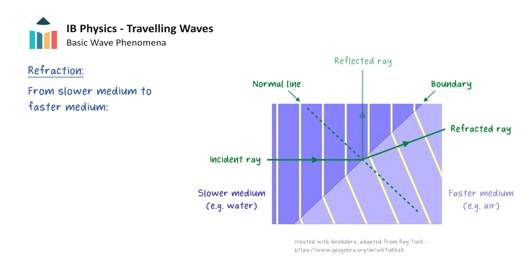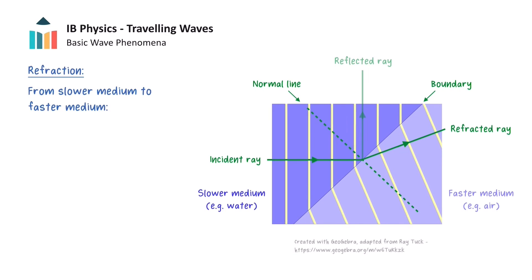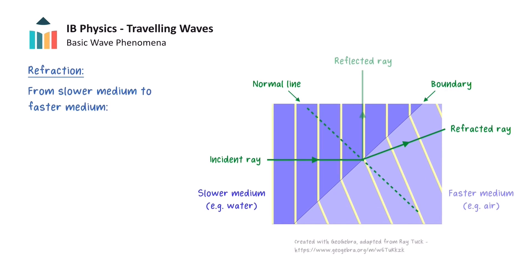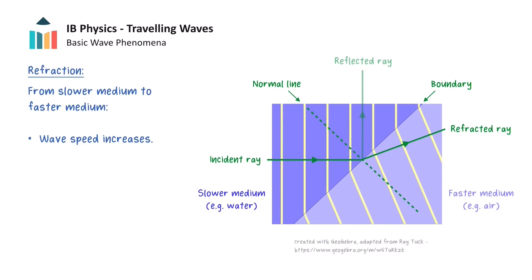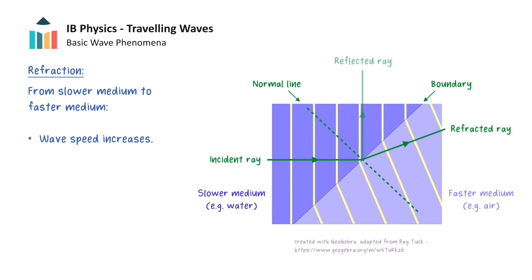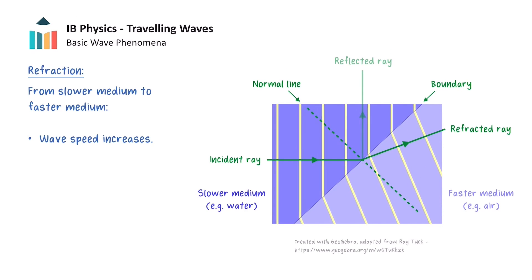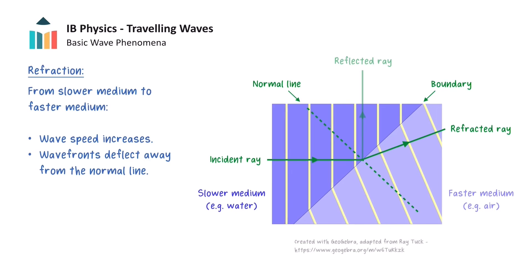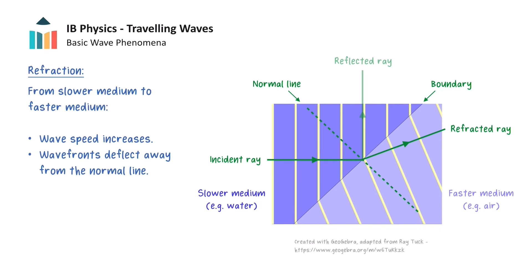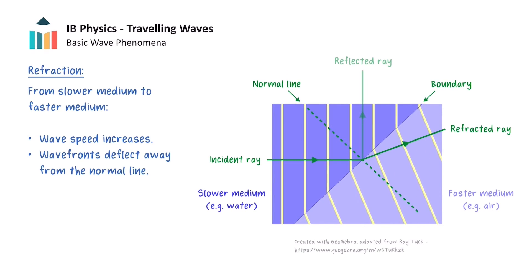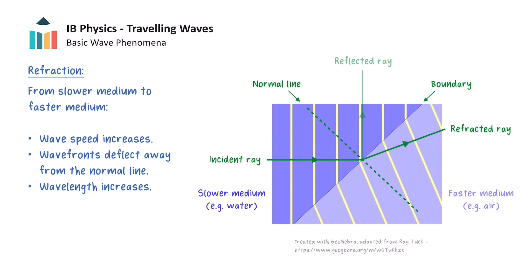The opposite scenario occurs when waves travel from a slower medium to a faster medium. In this case, one side of the wavefronts increases in speed before the other as it is incident at the boundary, causing the wavefronts to deflect away from the normal line. The wavefronts also become more spread out, increasing the wavelength of the wave.